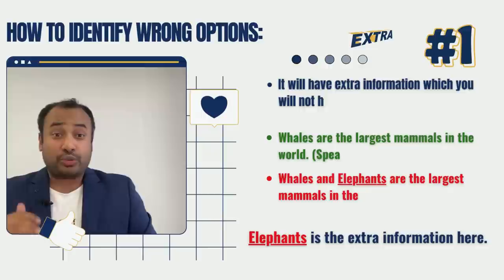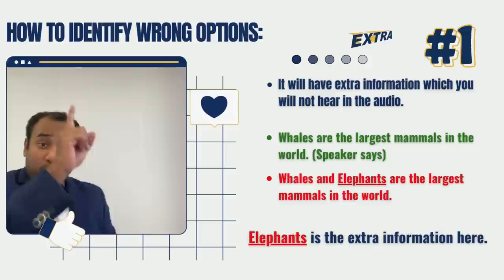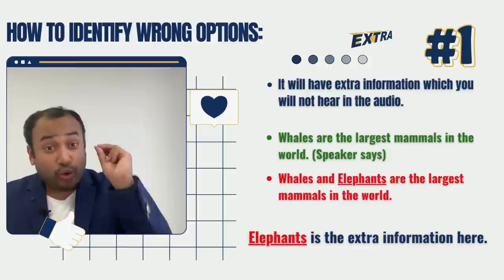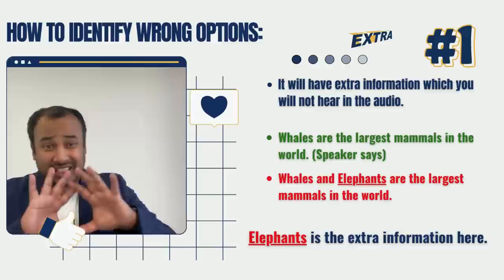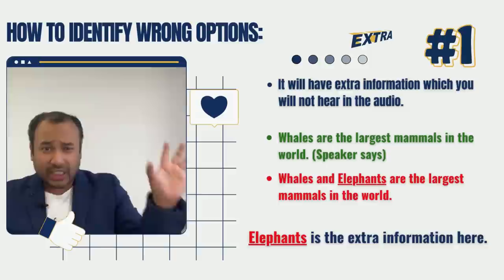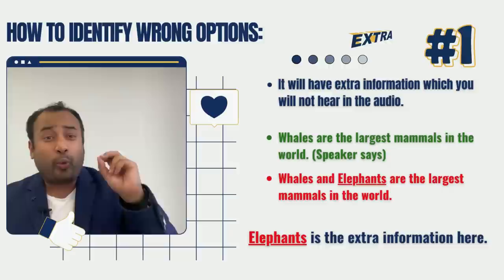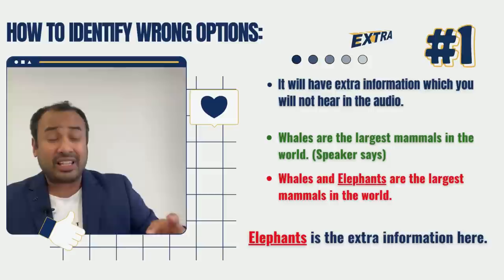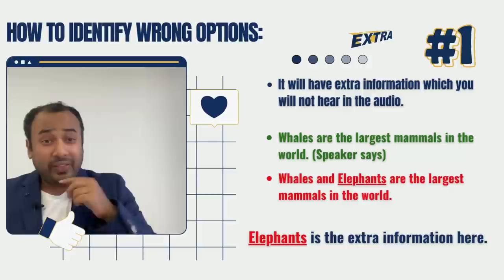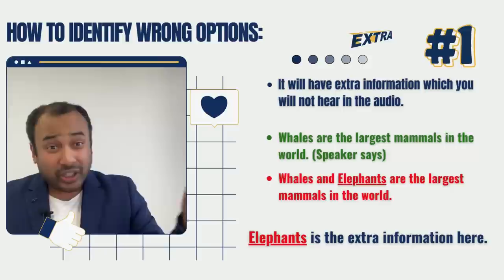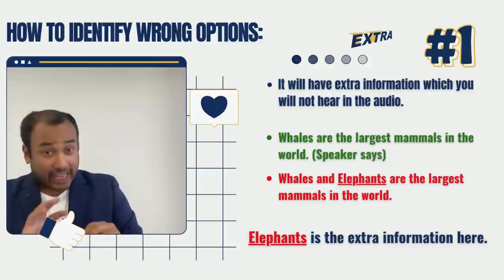Here are the wrong answer techniques PTE will use. Wrong answer type one: the answer contains totally opposite or new information compared to what you heard. For example, the audio says 'whales are the largest living mammals in the world,' but the answer says 'whales and elephants are the largest mammals in the world.' You never heard 'elephants' in the audio — they are adding extra words.